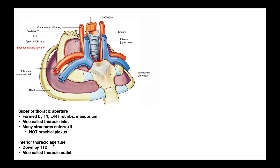We also have the inferior thoracic aperture, which is not shown here because it's all the way down by the T12 vertebra at the bottom of the rib cage. These are very technical terms, so a quick Google search might leave you confused. Historically, in some circles the thoracic inlet up here by T1 was also called the thoracic outlet, and that's the origin of the term thoracic outlet syndrome — it's at the thoracic inlet, just named differently for historical reasons.